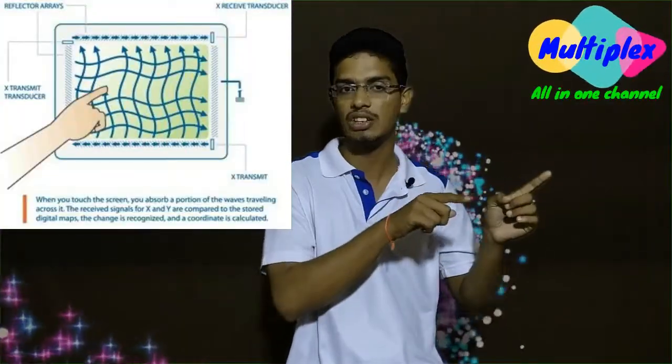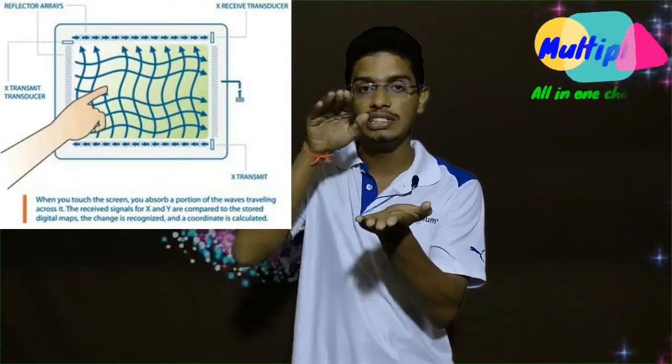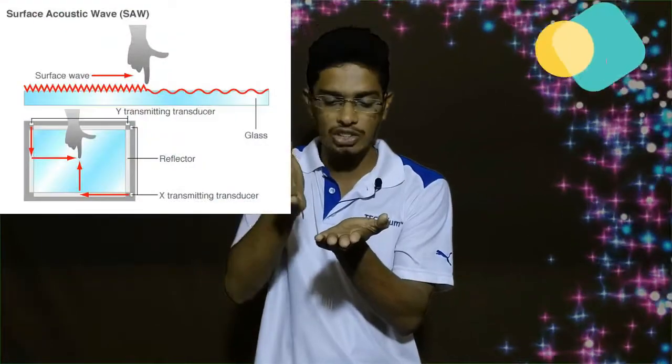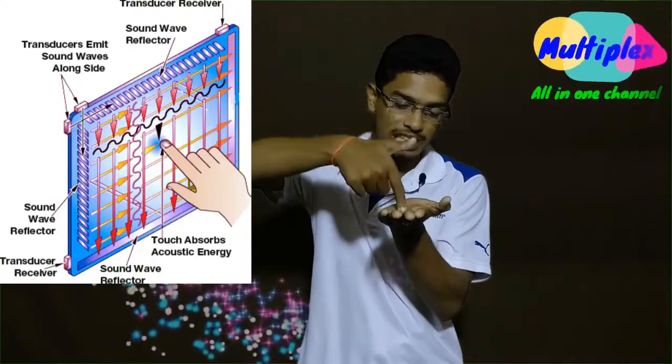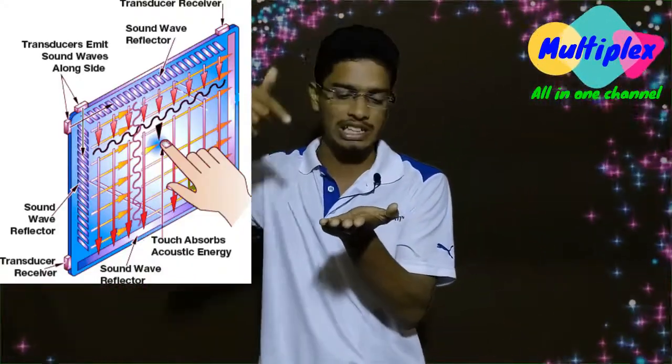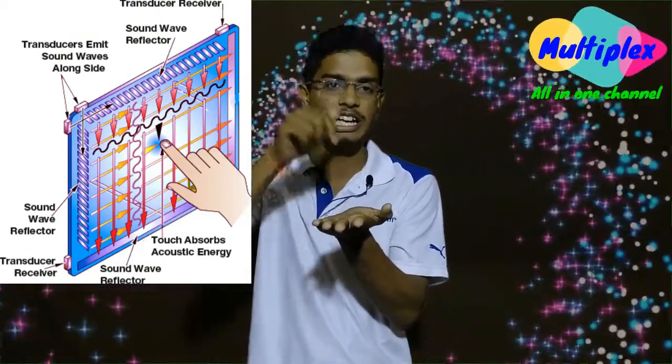The second model of perimeter-based touch screens is the surface acoustic wave touch screen. It works similarly to infrared, but instead of infrared beams, ultrasonic waves pass in the X and Y directions. When a touch occurs, the waves are absorbed at that point and the software detects and recognizes the touch location. An advantage is that it works with a stylus like an S Pen.